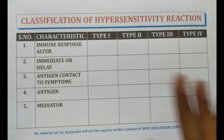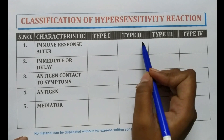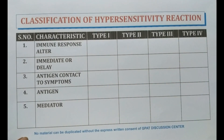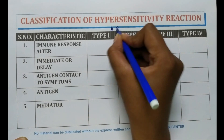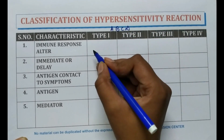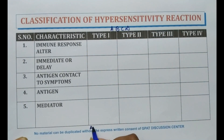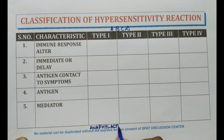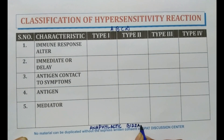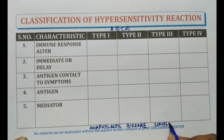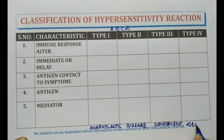There are four types of hypersensitivity reactions: Type 1, Type 2, Type 3, and Type 4. You can remember Type 1 to Type 4 reactions by A, B, C, D. Type 1 reaction is also known as anaphylactic reaction. Type B is known as cytotoxic type. Type 3 is complement reaction. Type 4 is delayed hypersensitivity reaction.